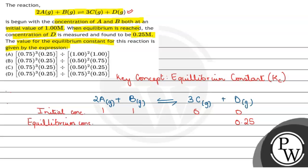तो D and C में क्या relation है? 1 is to 3, मतलब 1 D is present and 3 C present है. तो अगर D 0.25 है, तो C क्या होगा? It will be 3 into 0.25, it will give us 0.75. That means C का concentration equilibrium पे 0.75 है.